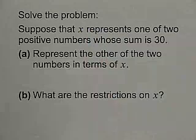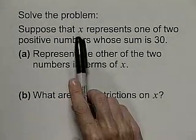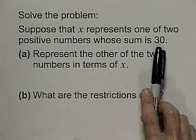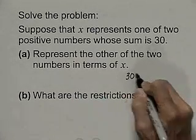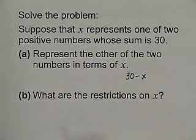Let's start with an application. We want to solve the problem: suppose that x represents one of two positive numbers whose sum is 30. The first thing we want to do is represent the other of the two numbers in terms of x. x is one of them. The two of them add to 30, so the other number must be 30 minus x.